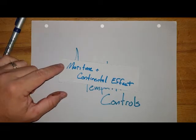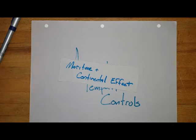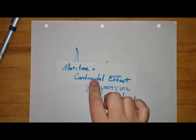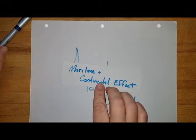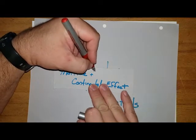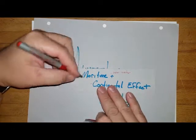Let's talk next about the maritime effect and the continental effect. Maritime might sound familiar - that's going to be what we see near the ocean, and we know what continents are, those are going to be big land masses. So really what we're looking at with these is what's it like near water and what is it like far away from water.